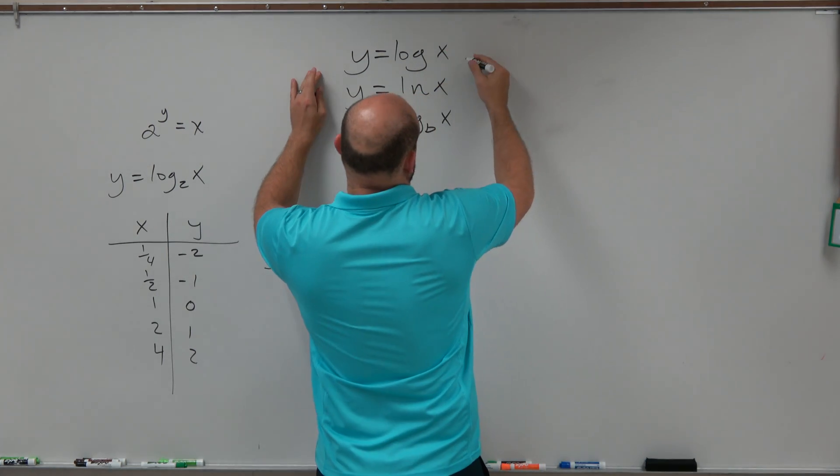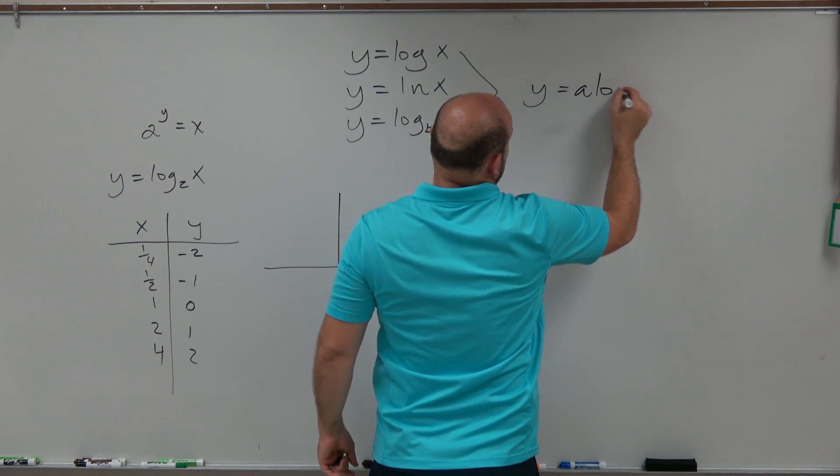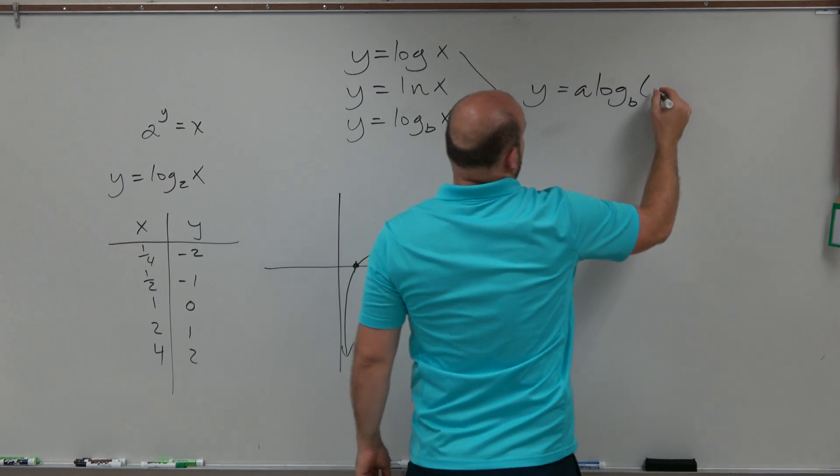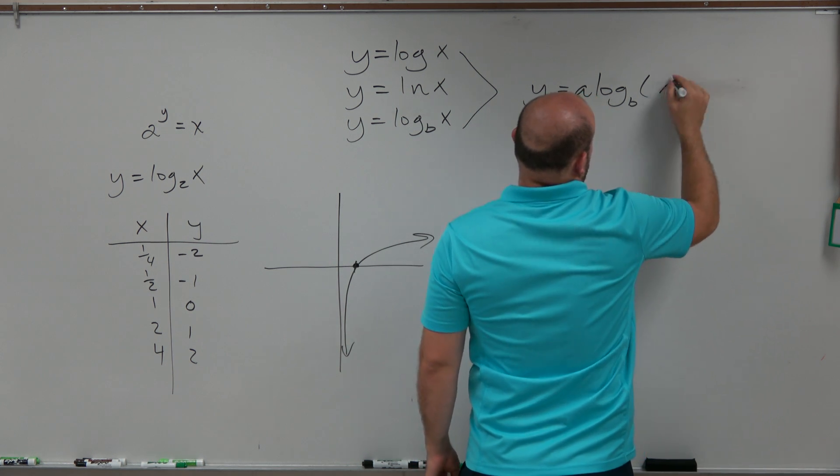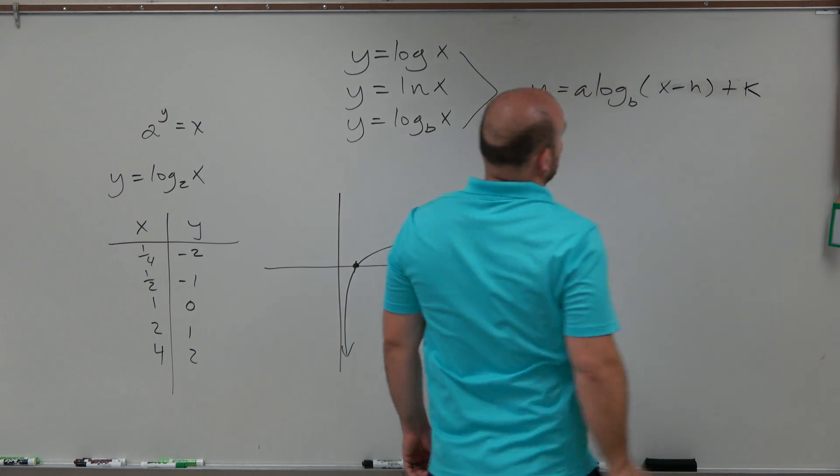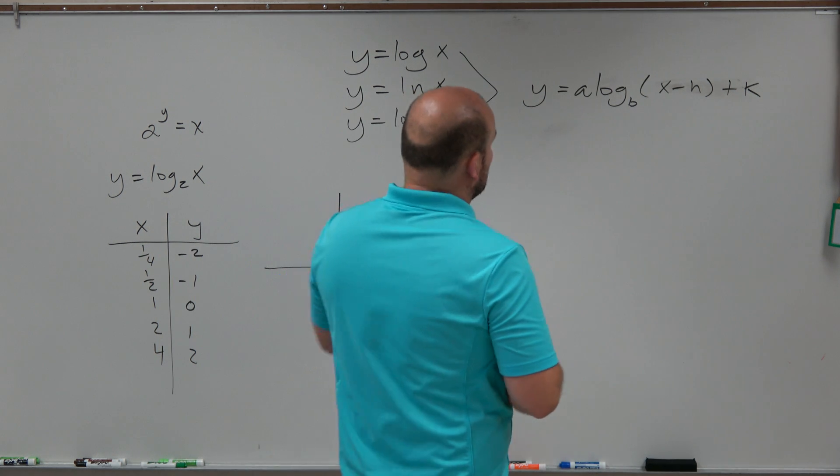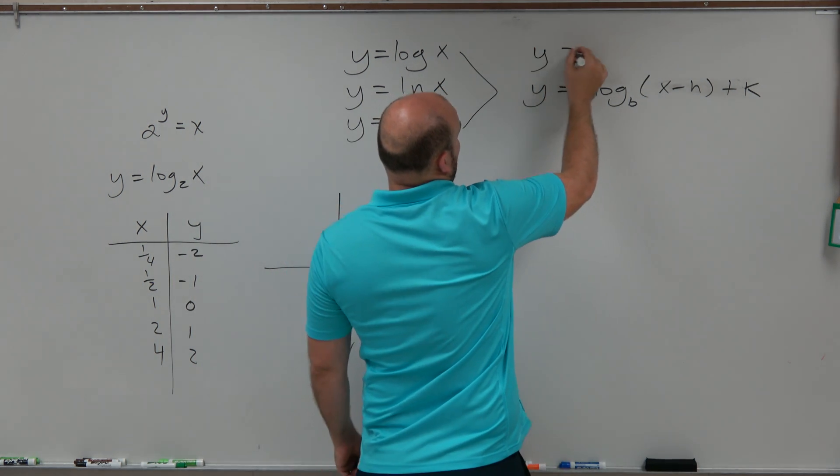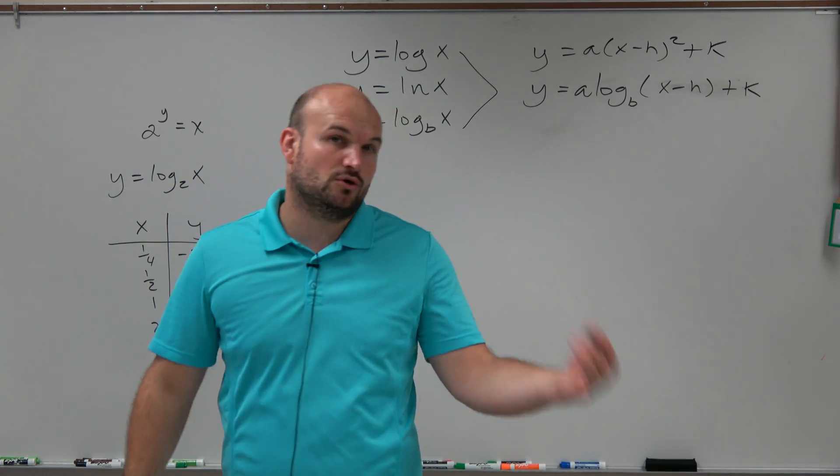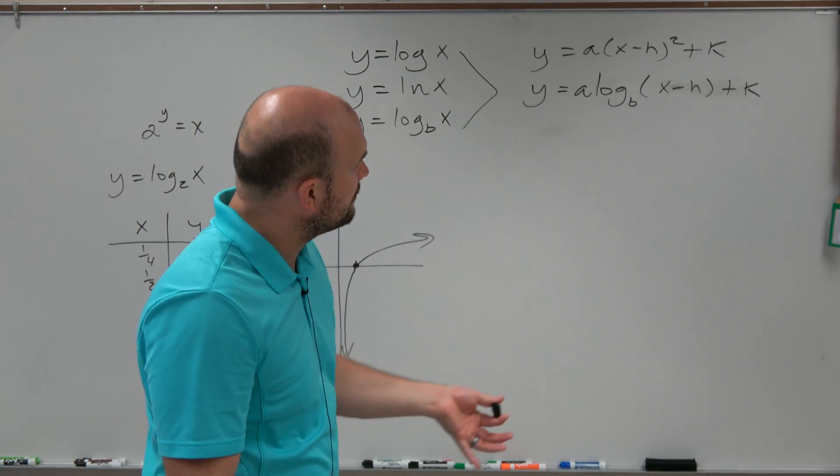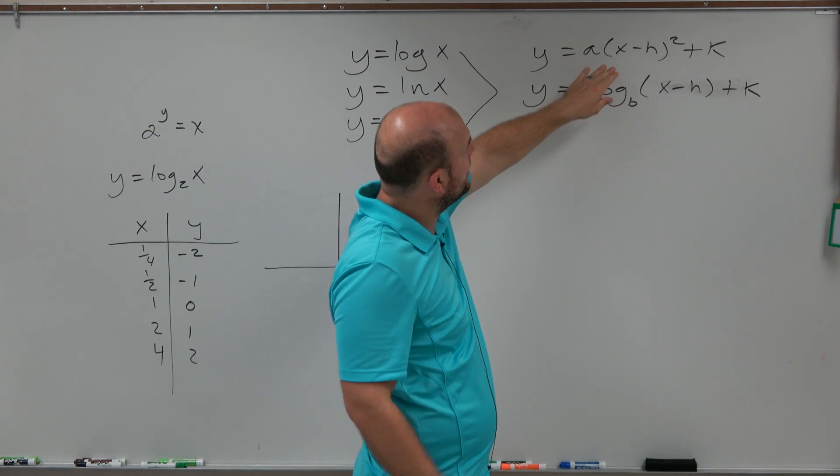So what we can do is, here's your kind of list of parent graphs. Those all kind of boil down to a times log base b of cx minus h plus k. So those boil down to your basic transformations. And so again, just like we've kind of discussed before, y equals a times x minus h squared plus k. I like to relate this to the quadratic function, because we're relating this to the quadratic functions here.